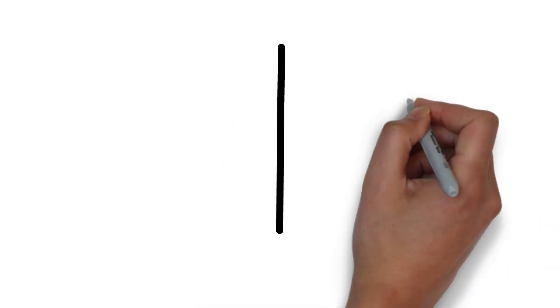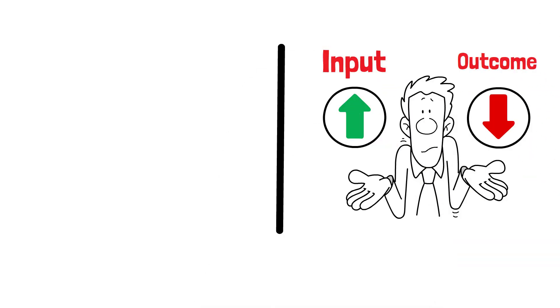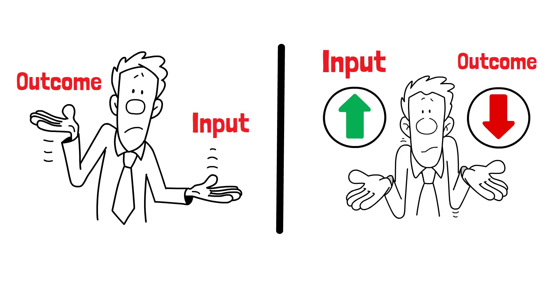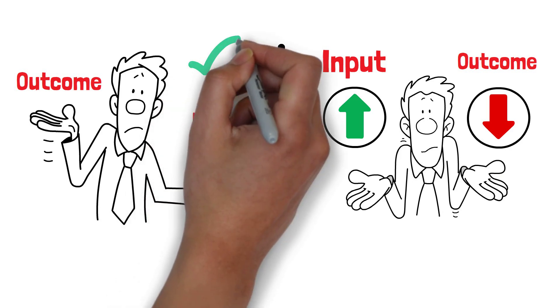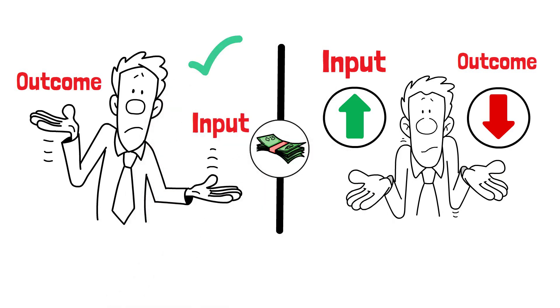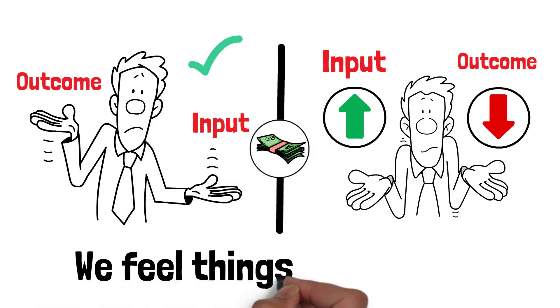The key to equity theory is that we compare our input-to-outcome ratios with those of others. If we perceive that others are receiving more favorable outputs, such as more money, for lesser inputs, we feel things are unfair.